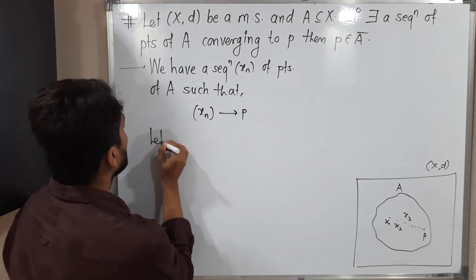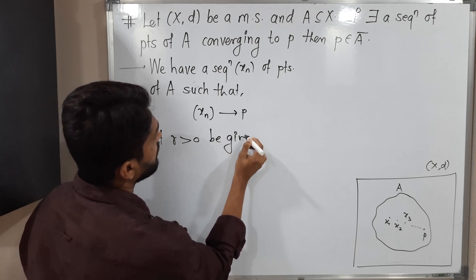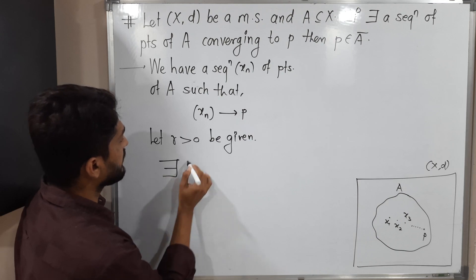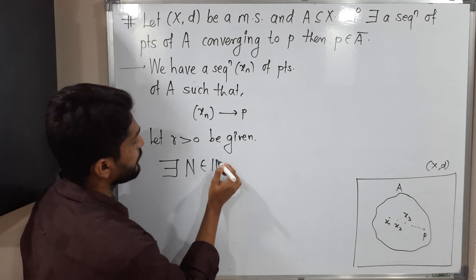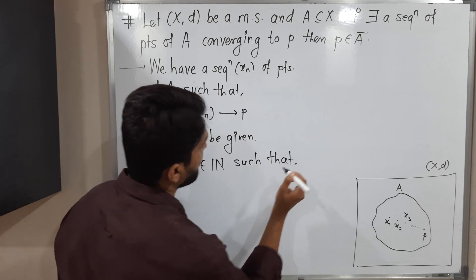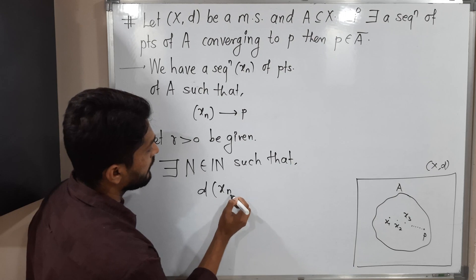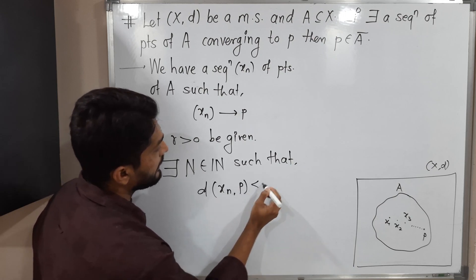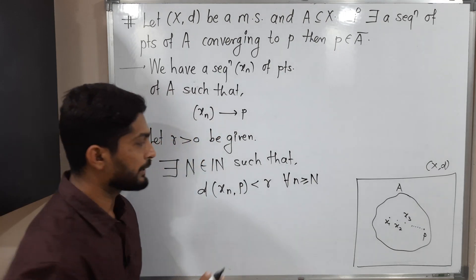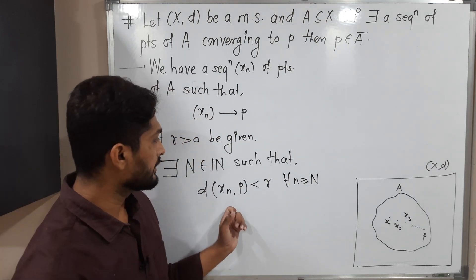So let R greater than 0 be given. I am taking any arbitrary R. By definition of convergent sequence, we can write there exists N belonging to the set of natural numbers such that d(xn, P) less than R for all n greater than or equal to capital N. So by definition of convergent sequence, we will get this.